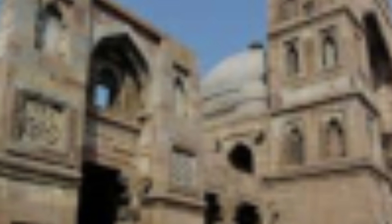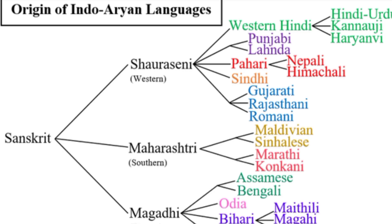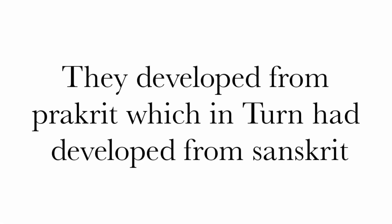Languages: The Indo-Islamic languages, mostly North Indian, started emerging in the 9th and 10th centuries. Odia and Bengali in the East, Marathi in the West, Hindi and related languages in Central India started coming up around this time. They developed from Prakrit, which in turn had developed from Sanskrit. Two forms of Hindi, Braj and Awadhi, became famous. Punjabi and Sindhi also grew in importance.